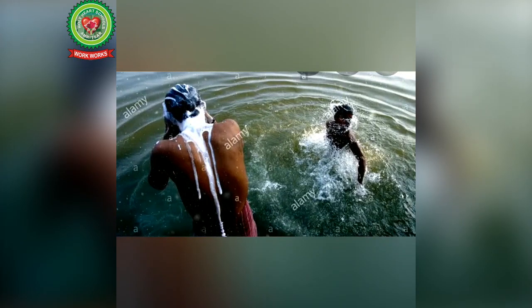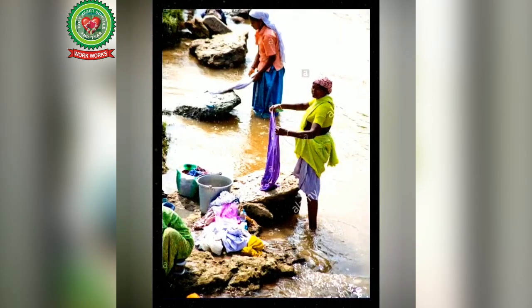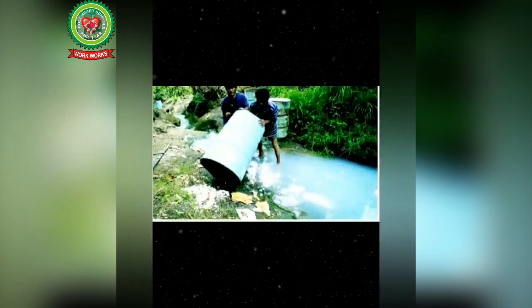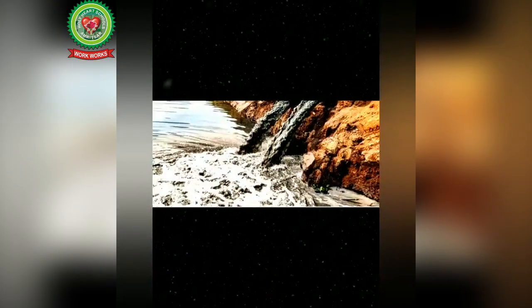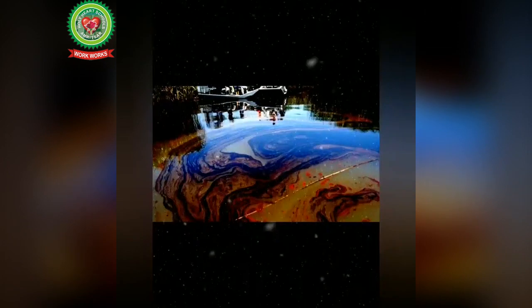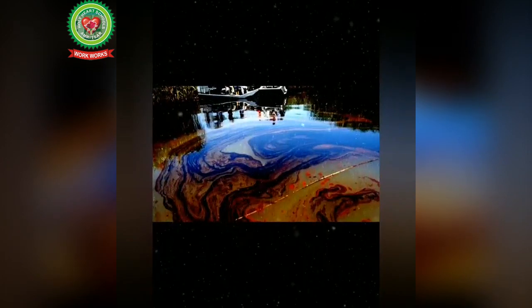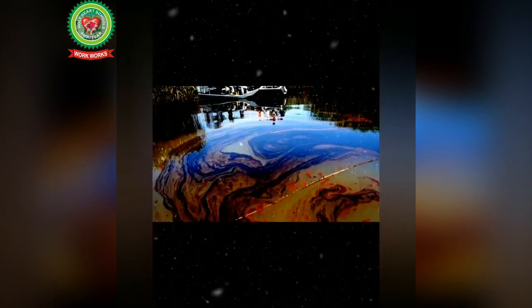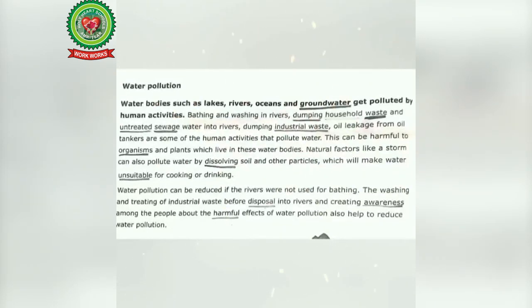Now students, see some pictures showing the reasons of water pollution. The first is bathing in a river, second is washing in a river, third is dumping household waste in a river, next is untreated sewage water into a river, dumping industrial waste in a river — it may be in the form of liquid or solid — and oil leakage from oil tankers. These are some human activities that pollute water.